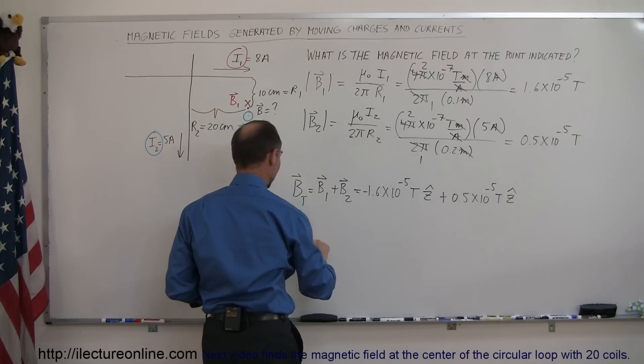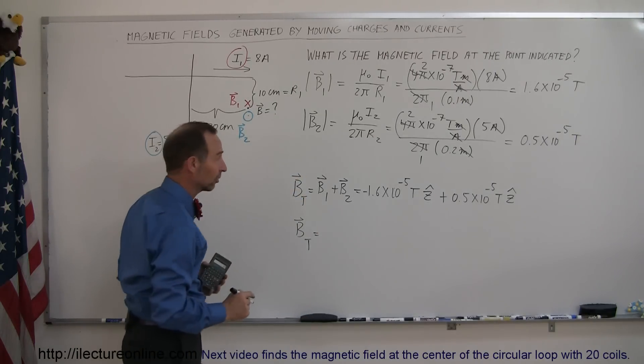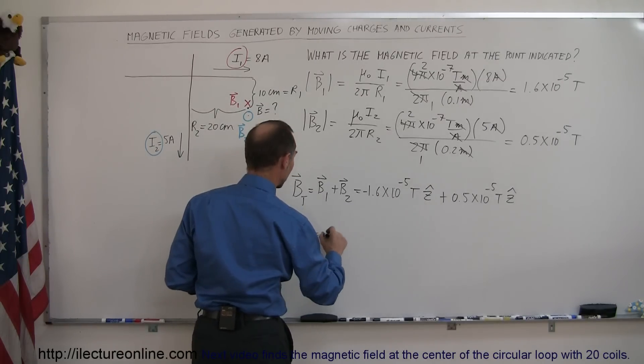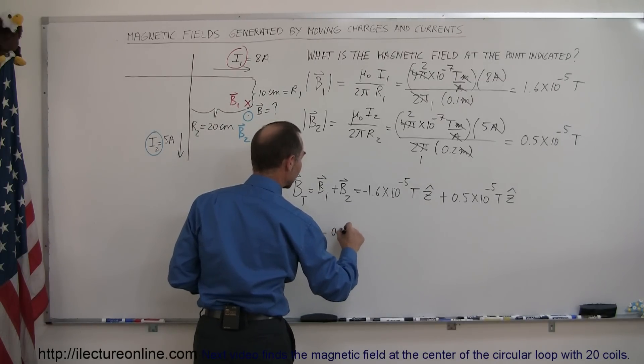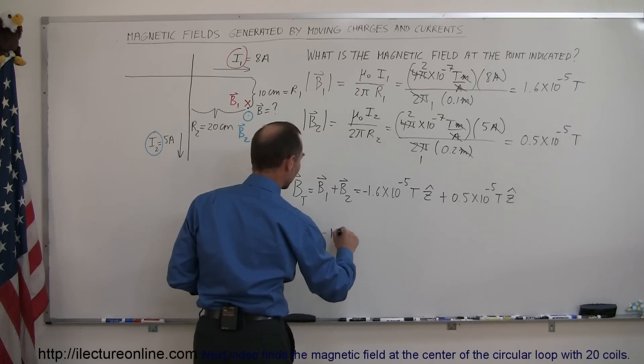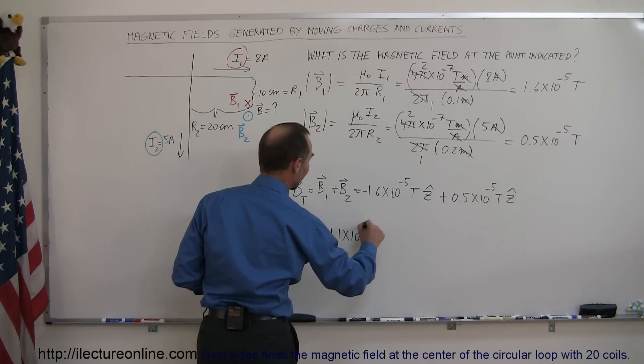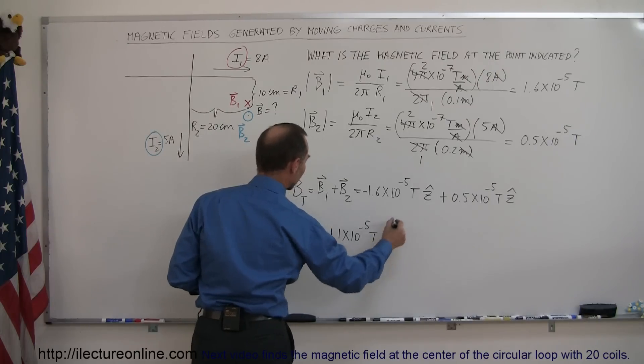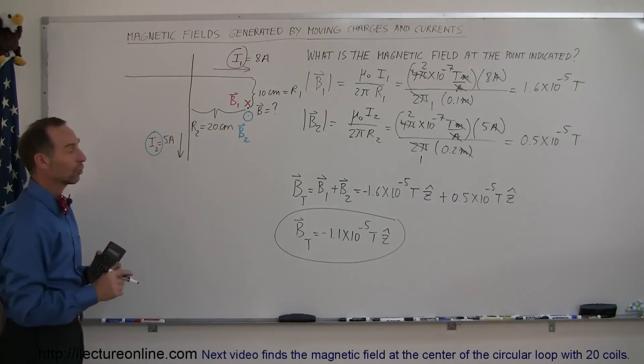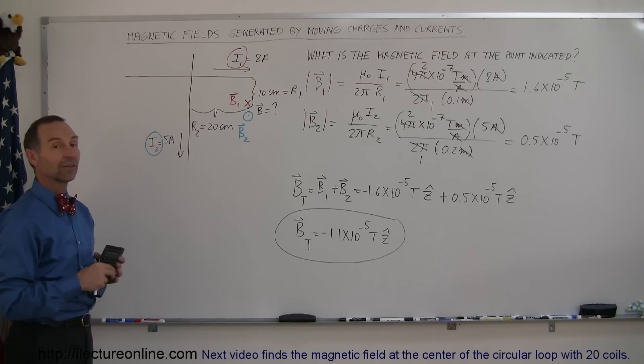The total magnetic field, caused by those two wires running in different directions, is equal to minus 1.6 plus a 0.5, that would be a minus 0.9, oh, no, no, not 0.9, that would be a minus 1.1 times 10 to the minus 5 teslas in the Z direction, it's going to be in the negative Z direction. So the final magnetic field is going to be into the board, with a value of 1.1 times 10 to the minus 5 teslas. And that's how you do a problem like that.